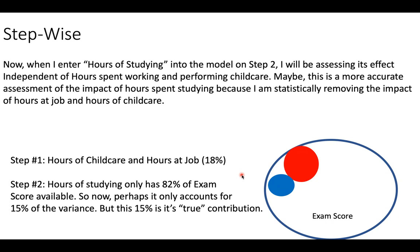Doing this is completely based upon previous research or theoretical concerns. We don't just do this arbitrarily. You do this only when it makes logical, theoretical, conceptual sense. In this case, we want to study pure hours of studying, so we remove how busy people are from the equation. The disadvantage is that hours of studying only gets to predict from the smaller remaining amount of exam score variance, but we accept that trade-off for the control we gain over the regression analysis.